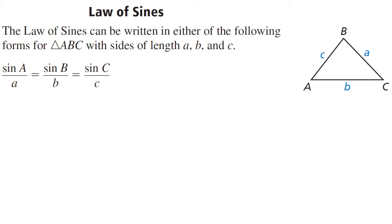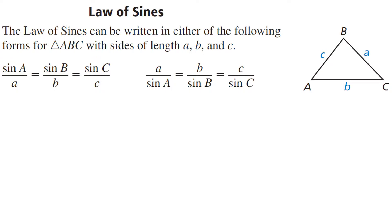The ratio of the sine of angle A to side a is the same as the ratio of the sine of angle B to side b, and that's the same as the ratio of the sine of angle C to side c. I'm not going to use all three ratios at once — I'm only going to use any two of them at a time; you'll see in the examples how that works. And of course it can be written in either of the following forms: the second way puts the side in the numerator and the sine of the angle in the denominator.